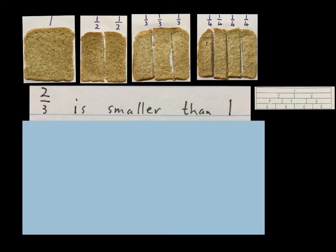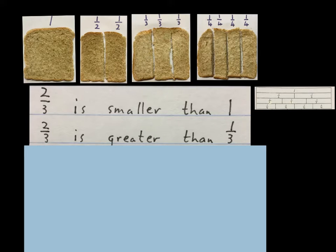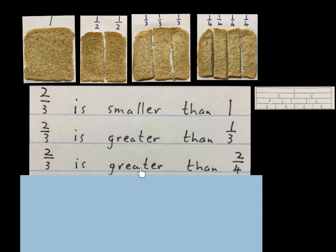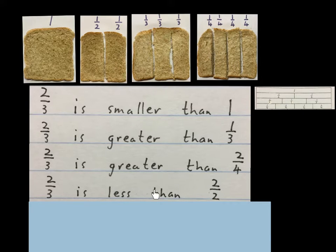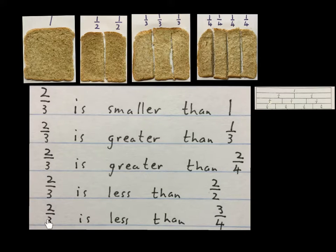Now we look at two thirds and its friends. Two thirds is smaller than one. Two thirds is greater than one third. Two thirds is greater than two quarters — the statement is true. Two thirds is less than two halves. Also get used to the words and the writing as we go. The last one says: two thirds is less than three quarters. Two thirds is less than the three quarters.